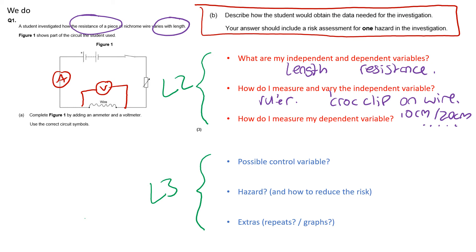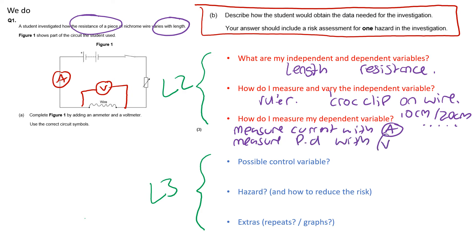For the dependent variable — resistance — you don't measure it directly. Instead, measure the current with the ammeter and the potential difference with the voltmeter, then calculate resistance using R = V ÷ I. If you've already drawn the circuit diagram, you don't need to restate that the ammeter is in series and the voltmeter is in parallel, but include those details if no diagram was drawn.